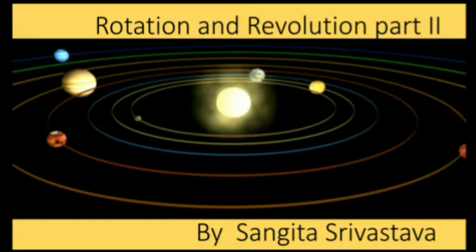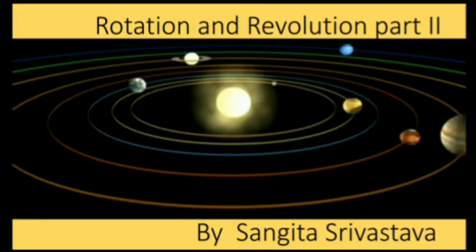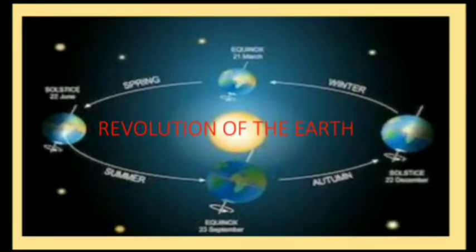Good morning students. Chapter three: Rotation and Revolution. This is the second part. In the first part we studied about rotation — its effects. Rotation is the spinning of the Earth on its axis, and its effects cause day and night. We find that celestial bodies appear to move in the opposite direction; the Sun appears to move towards the east while the Earth moves from west to east.